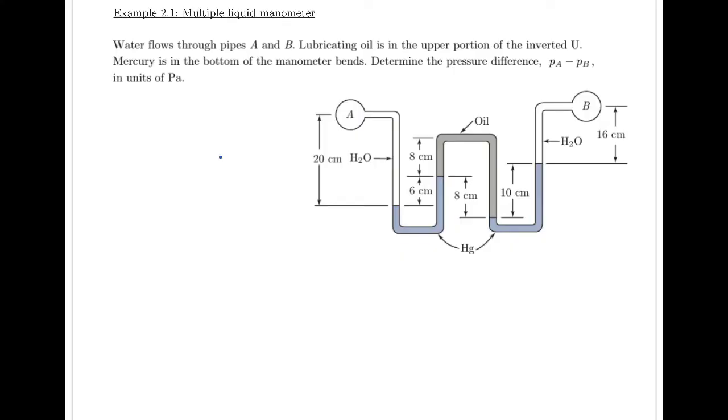We have two different pipes, pipes A and B, and water flows through them. Looking at this figure, we're looking at cross sections of these two pipes. The water is flowing in a direction normal to our page. Lubricating oil is in the upper portion of the inverted U. Mercury is in the bottom of the manometer bends. Determine the pressure difference P_A minus P_B in units of Pascal.